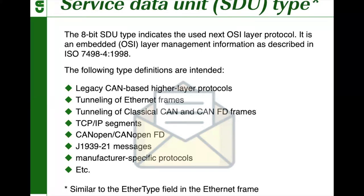In the first version of the CiA 611-1 document, we plan to specify the SDU type for content-based addressing and node addressing, node tunneling of Ethernet frames, and for classical CAN and CAN-FD data frames. Further types will be specified in later documents.